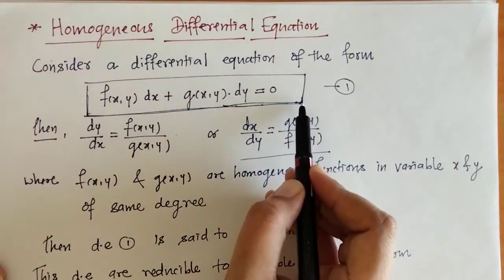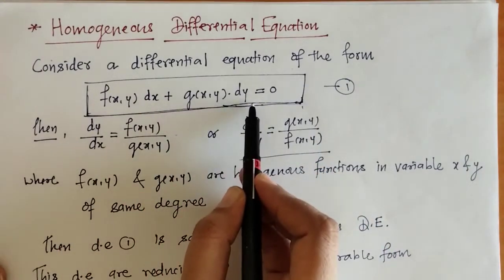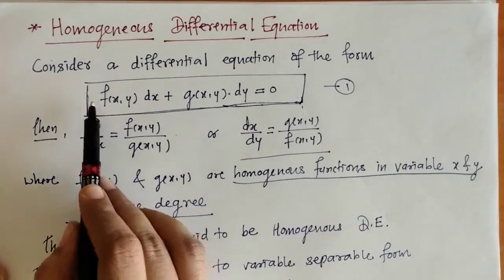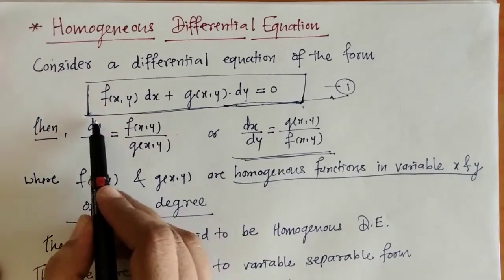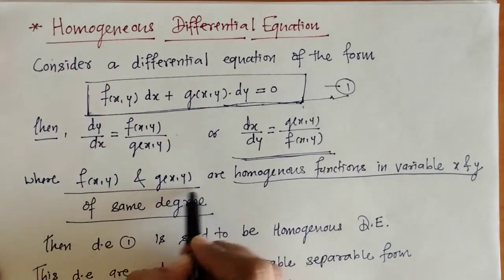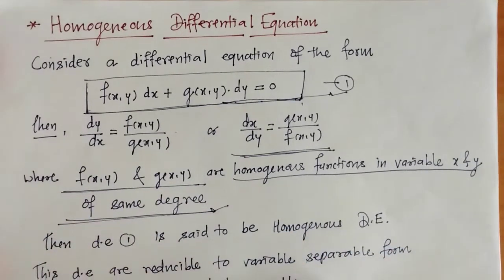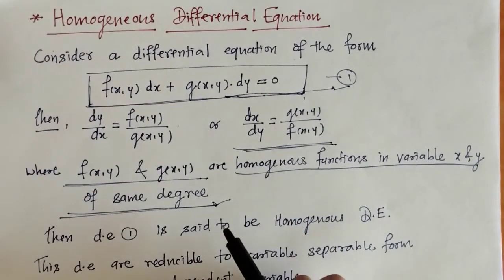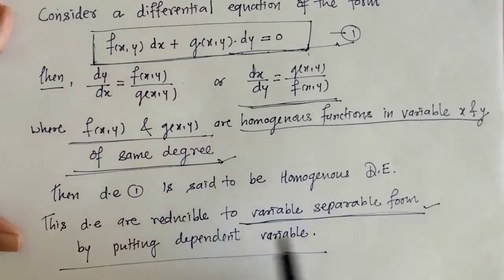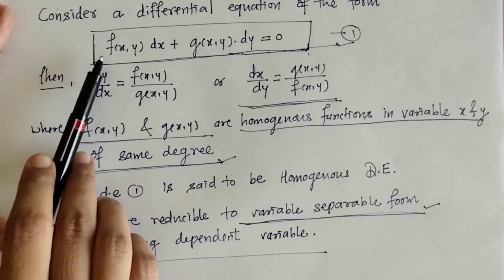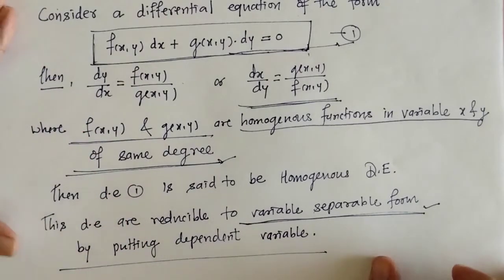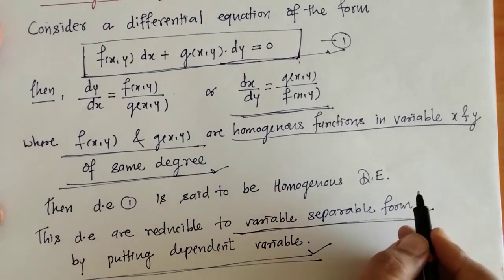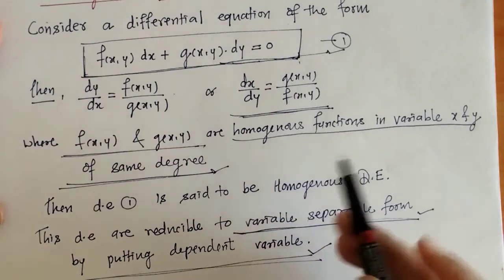Consider a differential equation of the form f(x,y)dx + g(x,y)dy = 0, where f(x,y) and g(x,y) are homogeneous functions of the same degree. We can write this in the form dy/dx or dx/dy. This is called a homogeneous differential equation, and it is reducible to variable separable form.